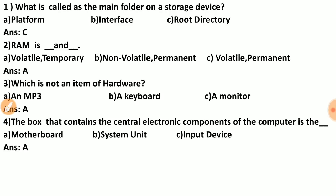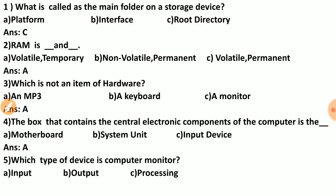Question five: which type of device is a computer monitor — input, output, or processing? A monitor is an output device. Whatever output is processed, we can see it on the monitor. That is why the monitor is the output device.